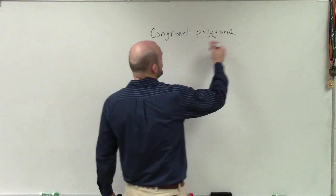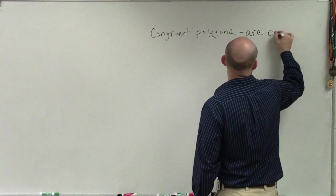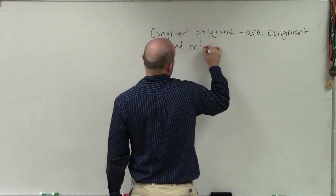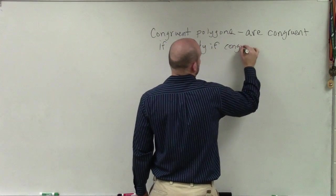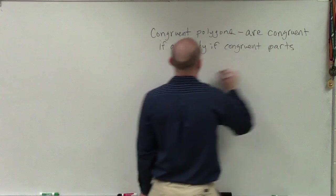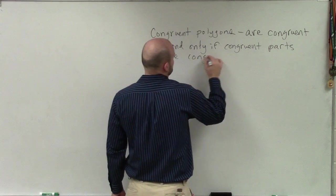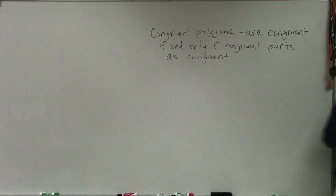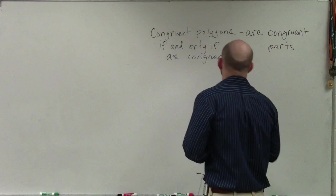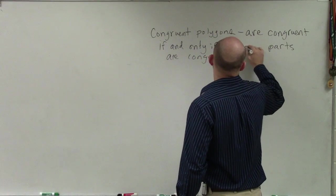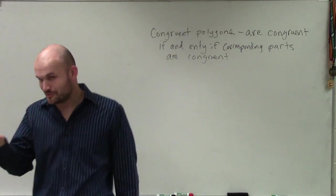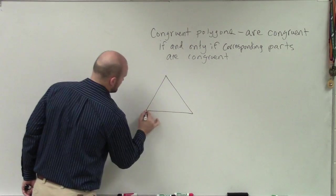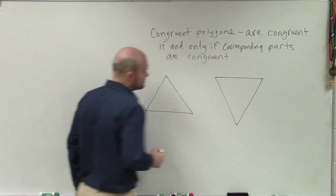So congruent polygons are congruent if and only if corresponding parts are congruent. Not congruent parts are congruent - that doesn't make sense. Corresponding parts are congruent. Let's think about what are going to be your corresponding parts.